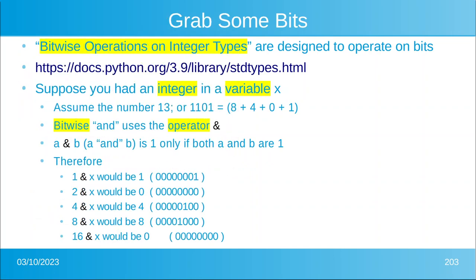Sometimes we have to deal with bits and not bytes, and the way we do this is with operators that specifically work with bits. In the Python documentation — the link is shown on screen — it's called 'Bitwise Operations on Integer Types.' Integers are used because they are represented directly in base two. Floating point variables are represented differently. Suppose you had an integer in a variable called x containing the number 13 — in binary that would be 01101. If you don't know how to use binary, now is a good time to pause and look it up.